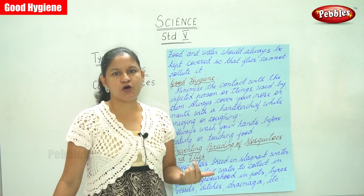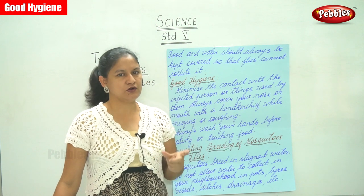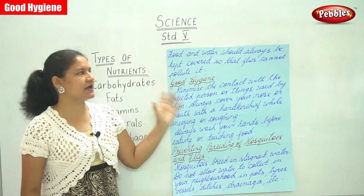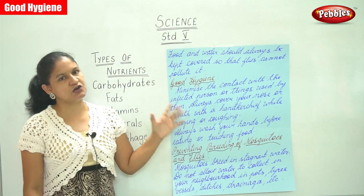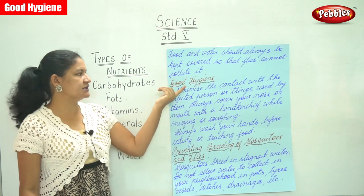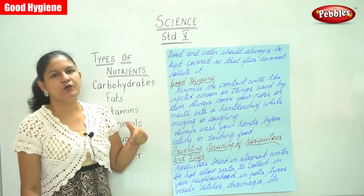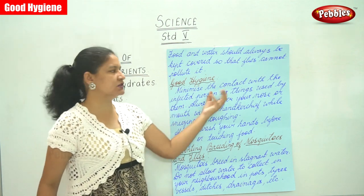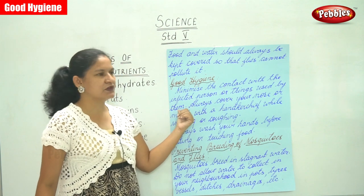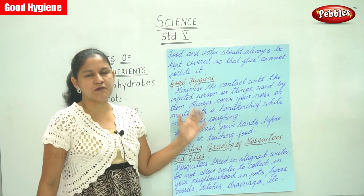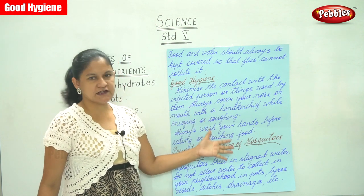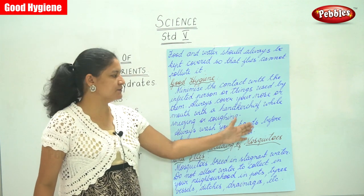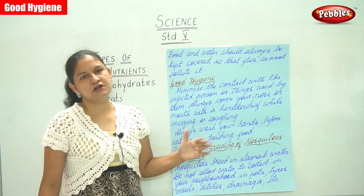Water needs to be safe when we consume it — it needs to be boiled, filtered, or chlorinated. Food and water should always be kept covered so that flies cannot pollute it. The next point is good hygiene: we need to minimize the contact with infected persons or things used by them. Always cover your nose or mouth with a handkerchief while sneezing or coughing. Always wash your hands before eating or touching food.